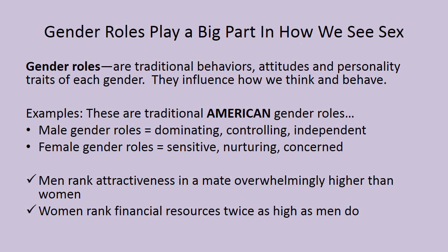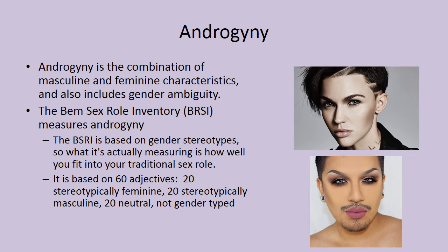Gender roles are traditional behaviors, attitudes, and personality traits of each gender that influence how we think and behave. American male gender roles tend toward being dominating, controlling, and independent, while female gender roles tend to be sensitive, nurturing, and concerned. Consistently across research, men rank attractiveness as primary in a mate, while women rank financial resources as primary in a mate — and there's a reason for that. Androgyny is the combination of masculine and feminine characteristics, and also includes gender ambiguity. The BEM Sex Role Inventory measures androgyny based on gender stereotypes — what it's measuring is how well you fit into your traditional sex role.